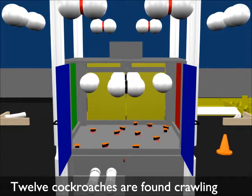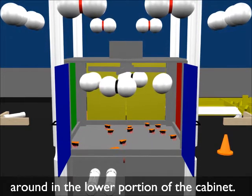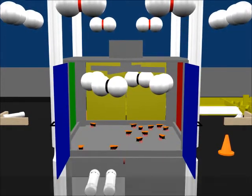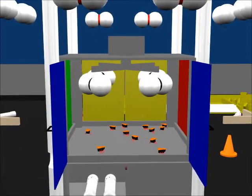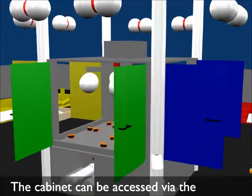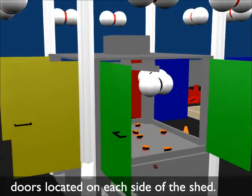Twelve cockroaches are found crawling around in the lower portion of the cabinet. Twelve additional flies are found hovering over the upper portion of the cabinet. The cabinet can be accessed via the doors located on each side of the shed.